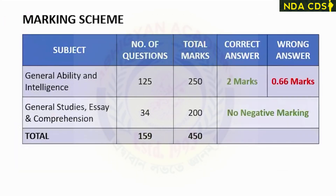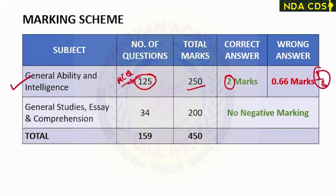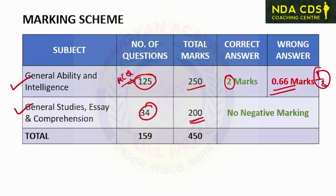Now, the marking scheme: in Paper 1, the General Ability and Intelligence Test, there will be a total of 250 marks with 125 MCQ questions. For each correct answer, you will get 2 marks. There is also negative marking, which is one-third of the marks allotted to each question. For Paper 2, there are 34 questions for 200 marks and there is no negative marking. When both papers are combined, the total number of questions will be 159 and the total marks would be 450.